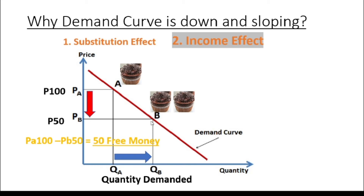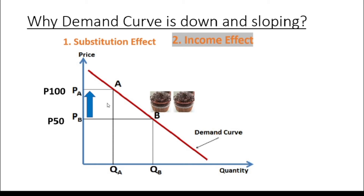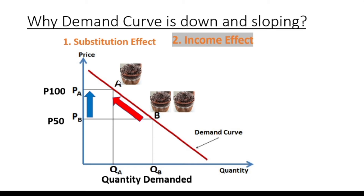Inversely, if on the other hand the price of cupcakes increases from 50 to 100 pesos — an increase of another 50 pesos — although the price increase in cupcakes doesn't actually affect your paycheck because your salary stays the same, it can make you feel like you have less money, and therefore it will cause you to buy less, which consequently means your quantity demanded for cupcakes is down. That explains how and why the income effect is one of the reasons why the demand curve is downward sloping.